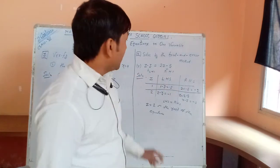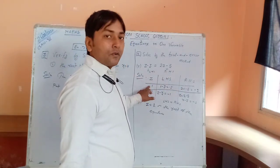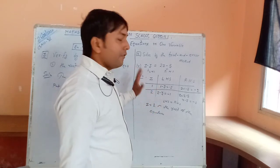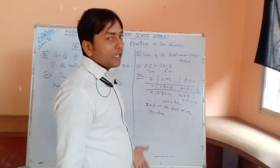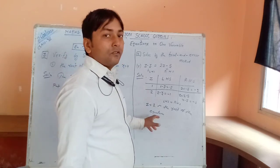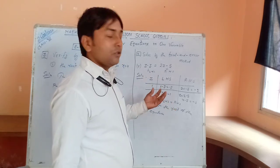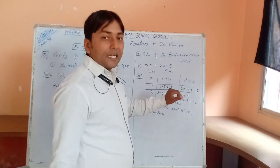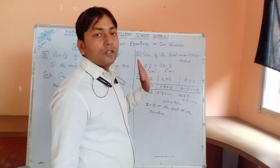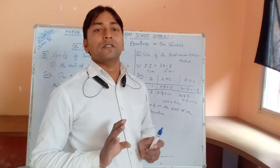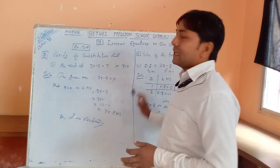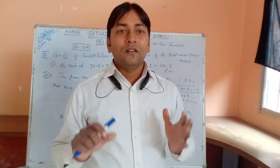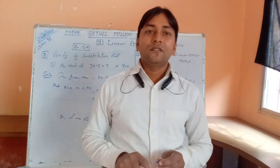In the trial and error method, start putting values from 1, then 2, 3, 4, 5... If the value of z satisfies the equation — LHS becomes equal to RHS — then that value is the root of the equation. I hope you got it. We'll see you in the next video. Till then, have a good day. Bye.